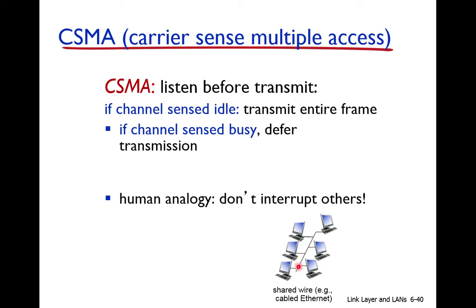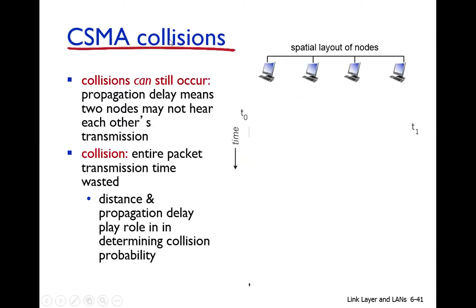Both nodes find the medium is free. For example, like two persons who both listen and hear no one talking, so both start talking at the same time. Similarly, both nodes start transmission at the same time, so their signals will collide. So collision is still possible in CSMA.